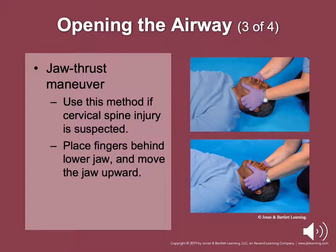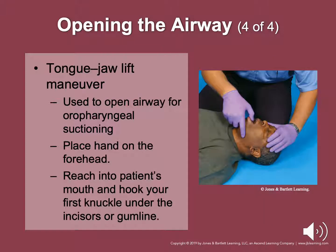The tongue-jaw lift maneuver is used to open the airway for oral suctioning. It cannot be used to ventilate a patient because it does not allow for adequate mask seal. To perform: position yourself at the patient's side, place one hand on the forehead, with your other hand reach to the patient's mouth, hook your finger on the incisors or gum line while holding the patient's head, and lift the jaw straight up.